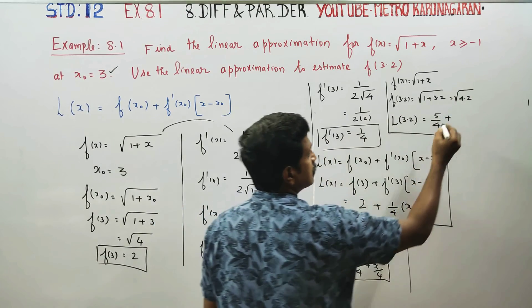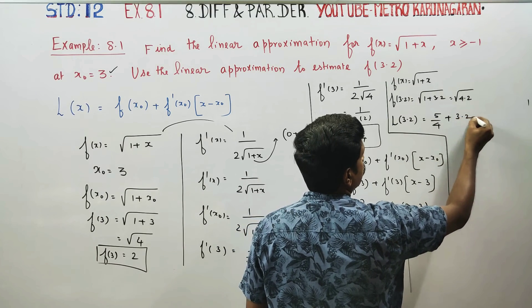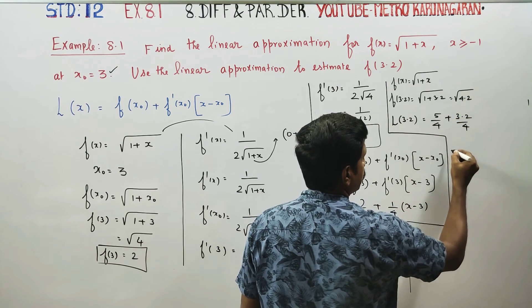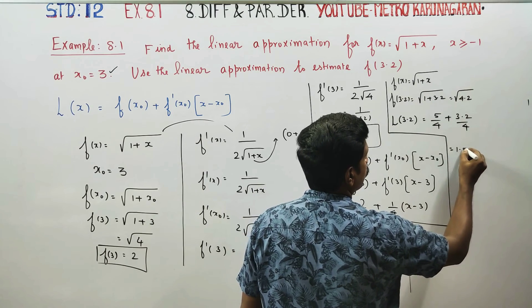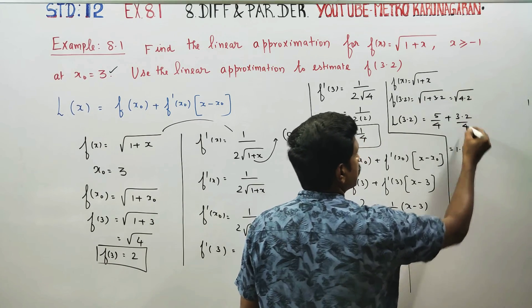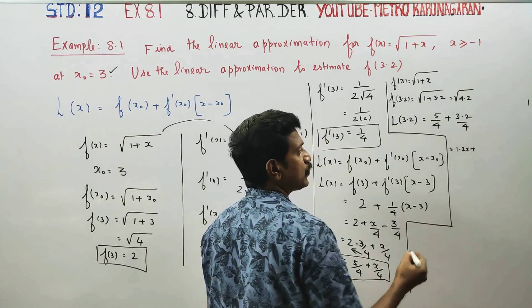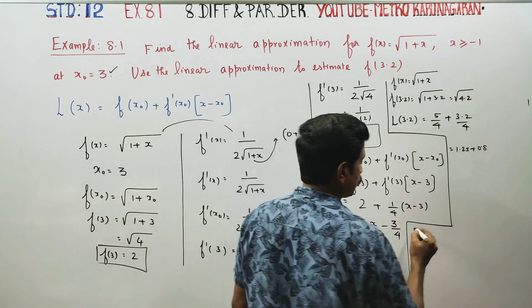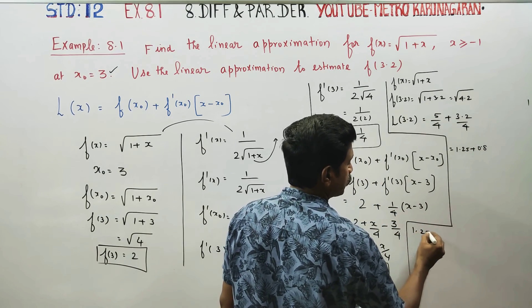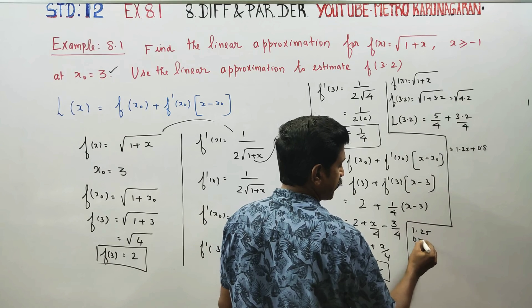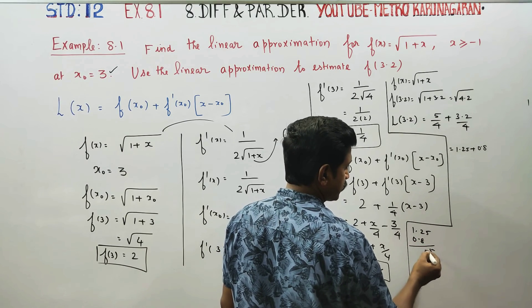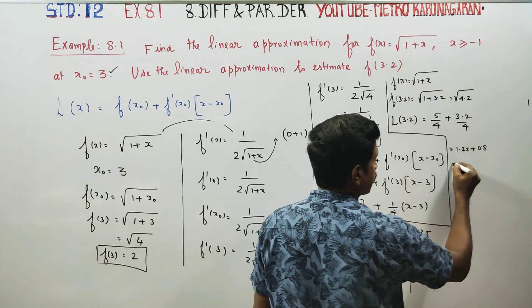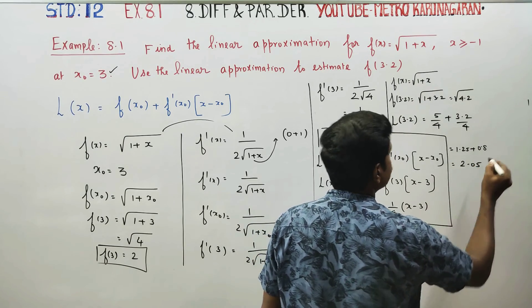Substitute x = 3.2: L(3.2) = 5/4 + 3.2/4. That gives 1.25 + 0.8 = 2.05.